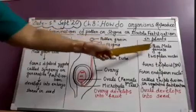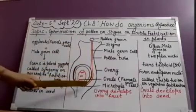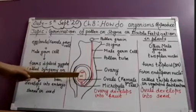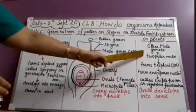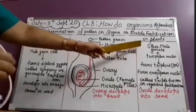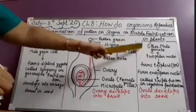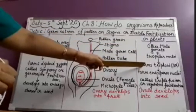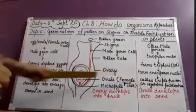The other male gamete also develops a pollen tube, enters the ovary, and gets fertilized with the polar nuclei. When this male gamete fertilizes with the two polar nuclei — so there are three nuclei involved: two polar nuclei and one male gamete — this fertilization is known as triploid. But this triploid does not form a zygote; instead it forms the endosperm nuclei.